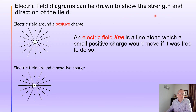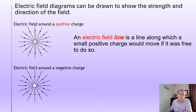The strength of the electric field comes from how close together the field lines are — the closer together the field lines, the stronger the electric field. Right close to the positive or negative charge the field lines are closer together, so you get a stronger electric field and a stronger force. These field lines spread out as they move away from the point charge, so the electric field gets weaker the further you are from the charges.